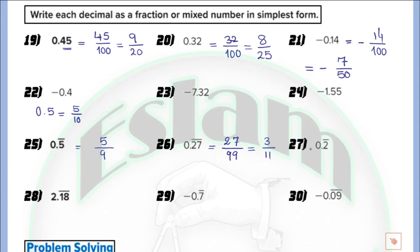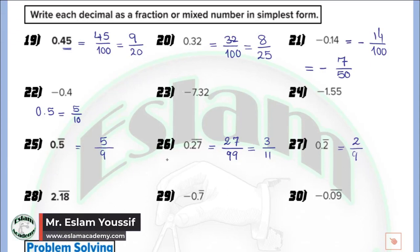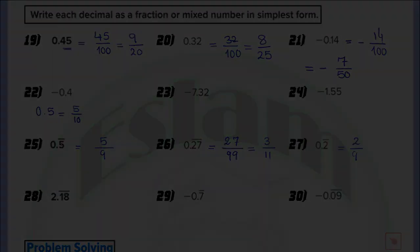In question number 27, we have 0.2 repeating. We write 2 as the numerator. There is only one digit at the right of the decimal, so the denominator is 9. For a normal decimal the denominator would be 10, 100, 1000 and so on depending on the number of digits. But for a repeating decimal the denominator is 9, 99, 999 and so on depending on the number of repeating digits. So 0.2 repeating equals 2 over 9. And that's how we convert between the different forms of rational numbers.